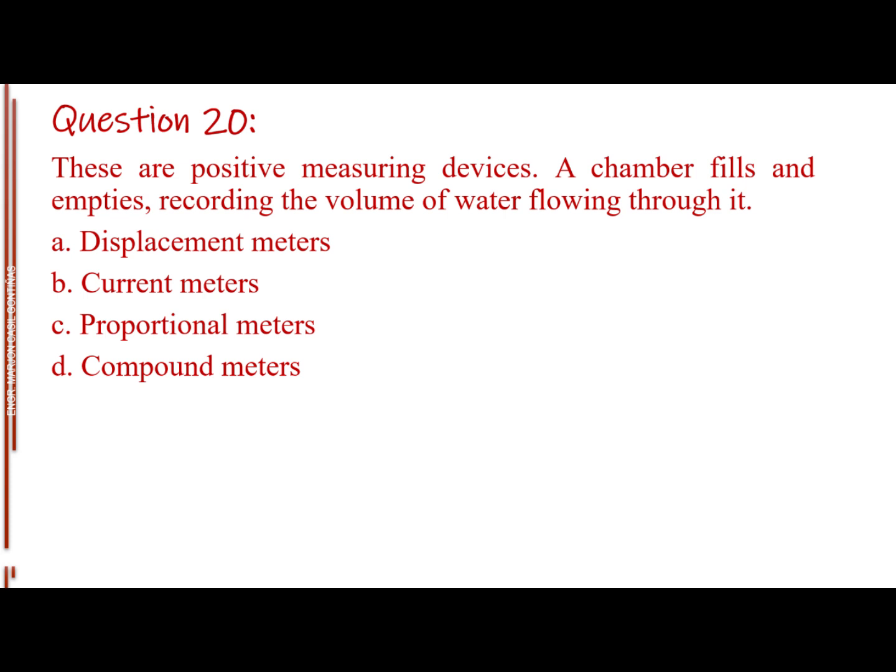Question number 20. These are positive measuring devices. A chamber fills and empties, recording the volume of water flowing through it. Letter A, displacement meters. Letter B, current meters. Letter C, proportional meters. Letter D, compound meters. The answer is letter A, displacement meters.